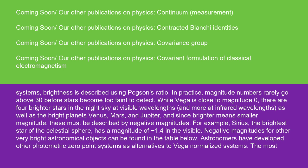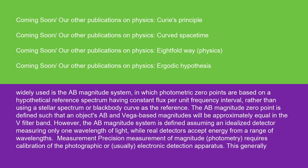Astronomers have developed other photometric zero-point systems as alternatives to Vega normalized systems. The most widely used is the AB magnitude system, in which photometric zero points are based on a hypothetical reference spectrum having constant flux per unit frequency interval, rather than using a stellar spectrum or blackbody curve as the reference. The AB magnitude zero point is defined such that an object's AB and Vega-based magnitudes will be approximately equal in the V-filter band. However, the AB magnitude system is defined assuming an idealized detector measuring only one wavelength of light, while real detectors accept energy from a range of wavelengths.